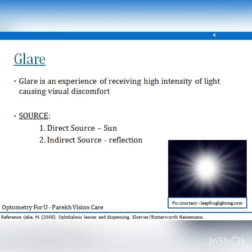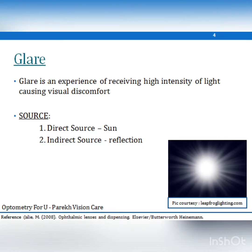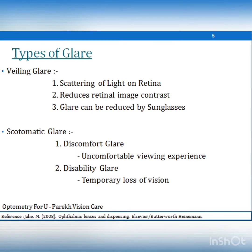Glare is an effect experienced due to the high intensity of light that falls in the visual field and causes visual discomfort. This can happen due to a direct source of light such as the sun or headlights, and also due to indirect sources like reflection. Reduced visual acuity is caused by excessive illuminance that results in the bleaching of retinal receptors.